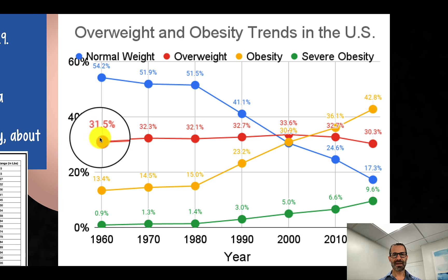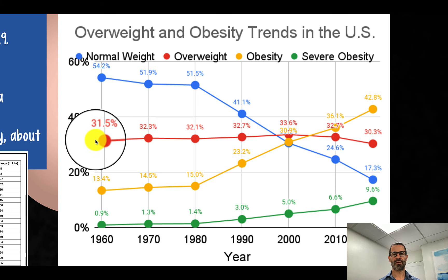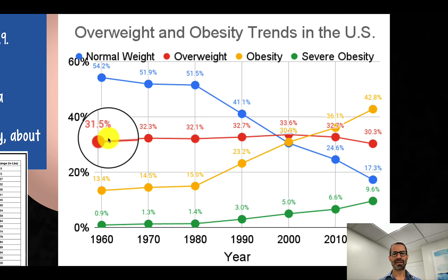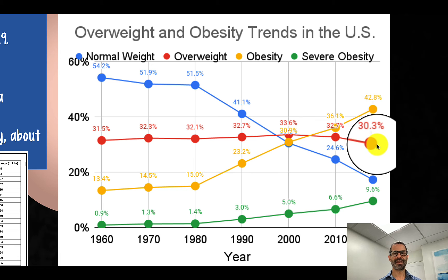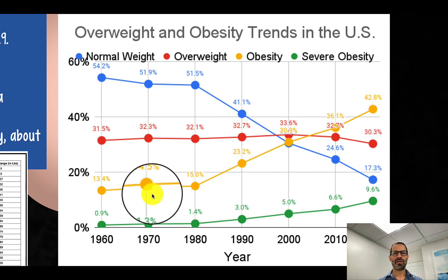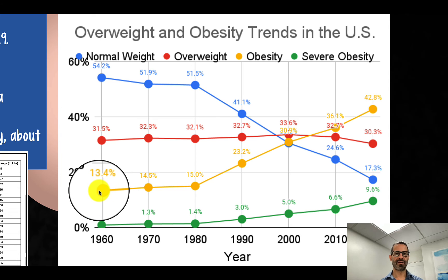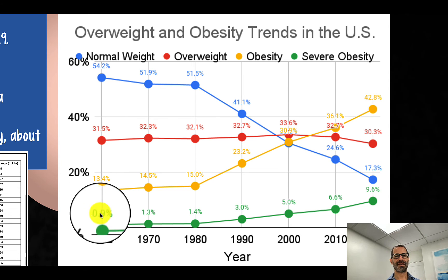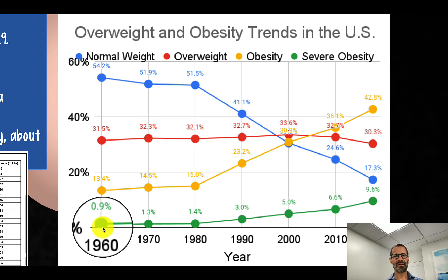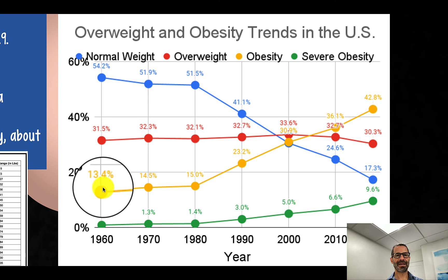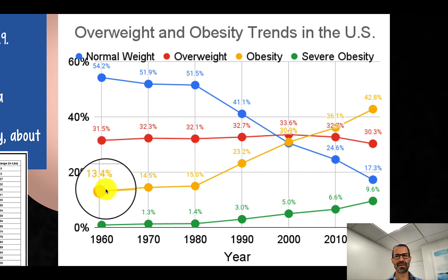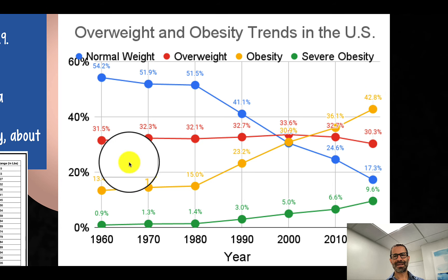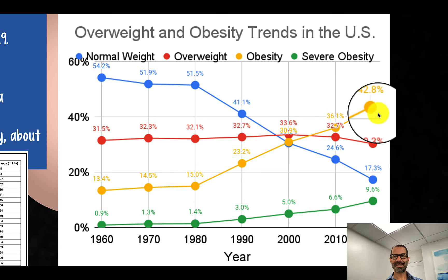The percentage of people who are overweight has been basically stable at about one in three — 31.5 percent in 1960 and 30.3 percent in 2018. What's really increased is the prevalence of obesity and severe obesity. Obesity was 13.4 percent, or about one in eight adults, in 1960. In 2018 it's almost half — 42.8 percent.